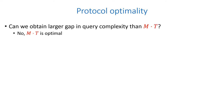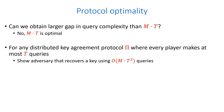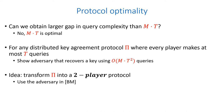A question arises: can one design a distributed protocol which achieves a greater query complexity gap? The answer is no. We show that the gap of M times T is optimal. To do that, for any key agreement protocol pi where every player makes at most T queries, we show an adversary that can recover a key agreed in pi using order of M times T squared queries to the random oracle. We transform pi into a two-player protocol, and then use the adversary introduced in the paper by Barak and Mahmoudi.